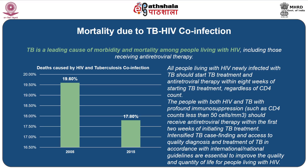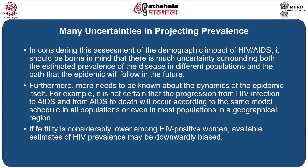There are many uncertainties in projecting the prevalence. In considering this assessment of the demographic impact of HIV, it should be borne in mind that there is much uncertainty surrounding both the estimates of prevalence of the disease in different populations and the path that the endemic will follow in future. More needs to be known about the dynamics of the epidemic itself. For example, it is not certain that the progression from HIV infection to AIDS and from AIDS to death will occur according to the same model schedule in all populations or geographical regions. If fertility is considerably lower among HIV-positive women, available estimates of HIV prevalence may be downwardly biased.